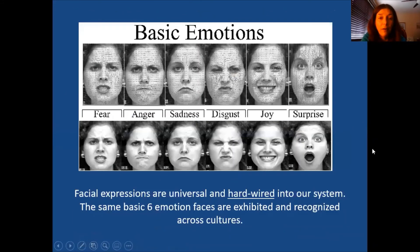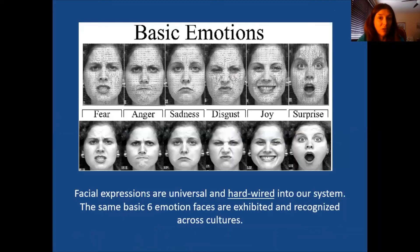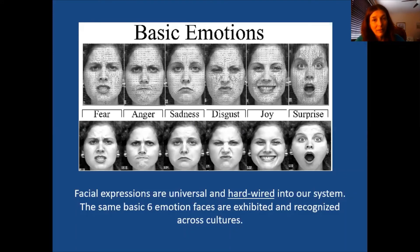Across all cultures — including tribal cultures insulated from the outside world — people share the same basic emotions. Even many animals, especially mammals, share some of these emotions. This shows from an evolutionary and biological perspective that these are inherited. They've even found that children who were born blind — who have never seen an emotion in another person — express these same emotions innately. You can't say they just copied somebody. So that's kind of interesting.